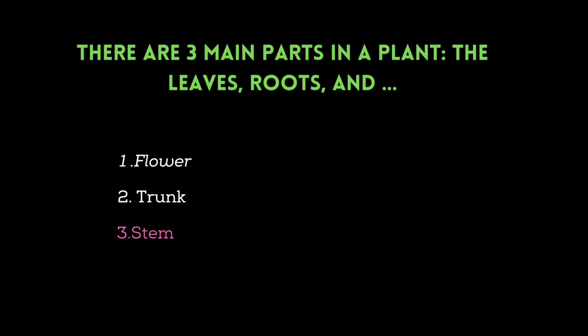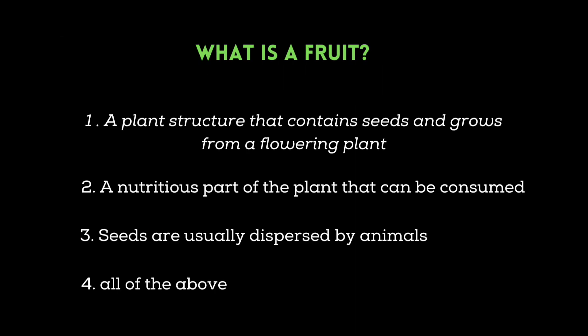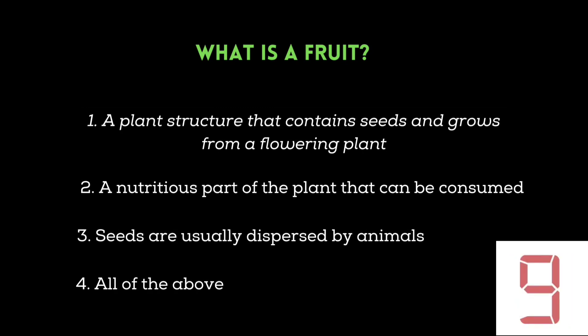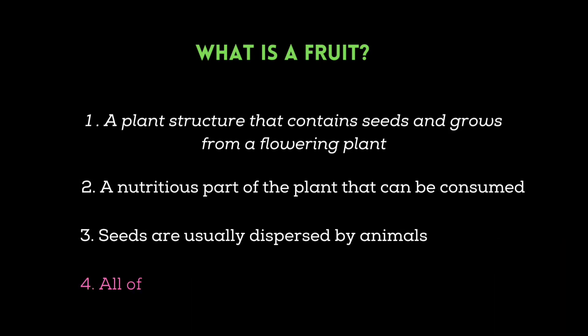The next question is: what is a fruit? A plant structure that contains seeds and grows from a flowering plant. A nutritious part of the plant that can be consumed. Seeds are usually dispersed by animals. All of the above. The correct answer is all of the above.